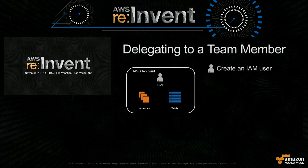You create an IAM user and then you grant permissions to that user. By default, when you create a user, the user gets zero permissions — you have to explicitly assign permissions for the user to do something. Then you can set credentials on that user: username and password, which is used for console access, or access keys, which are used for API access.